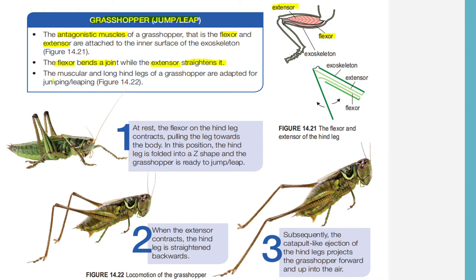Now let's look at the hind legs — they are muscular and long. Can you see the hind legs right here? They are muscular and long, and that is because they are adapted for jumping and leaping. When we say locomotion in grasshoppers, we are mainly referring to these two actions: jumping and leaping.